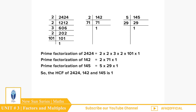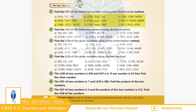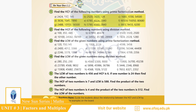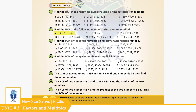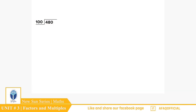اسی طرح اگلے سوال آپ نے خود حل کرنے ہیں۔ Question 2: Find the HCF of the following numbers using division method. Part (a): 100, 350, and 480۔